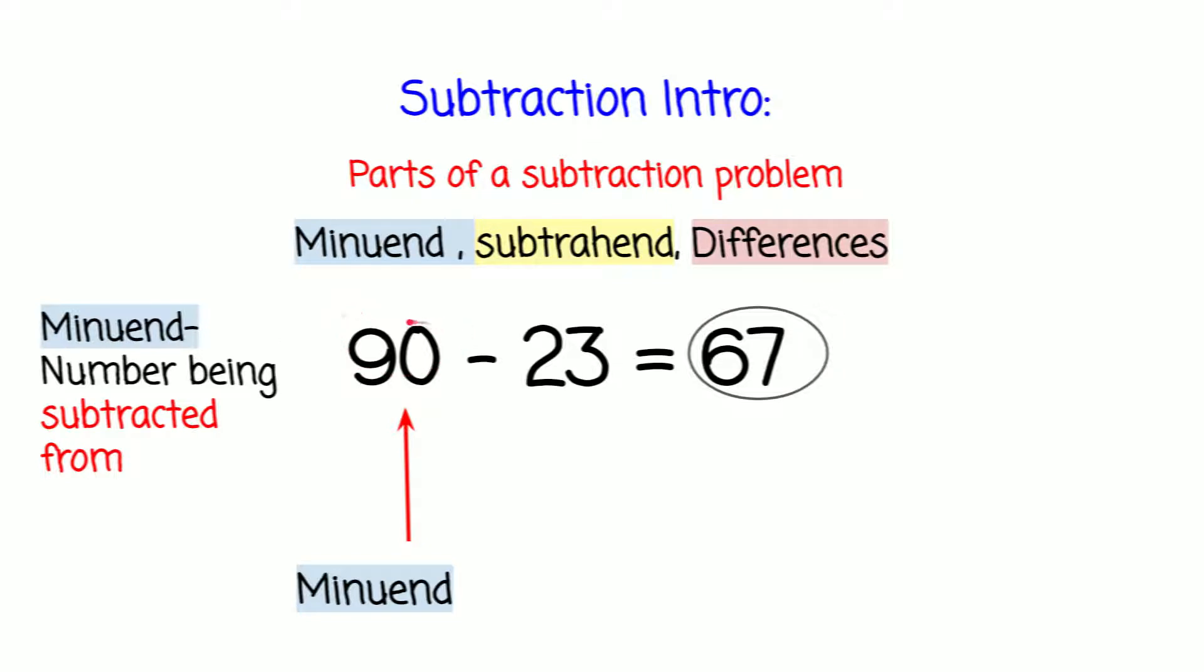So 90 is - wait, 23 is subtracted from 90. So this is the minuend, and that is minuend.